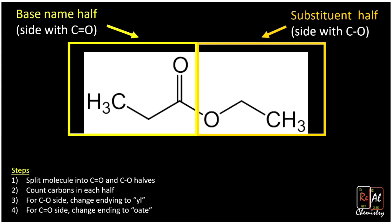First, split the molecule in two so that we have a C=O bond on one side and a C-O bond on the other. Check. We've done that. Count the carbons in each half.